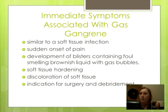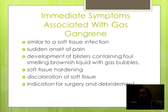The immediate symptoms associated with gas gangrene are as follows. It is similar to a soft tissue infection. There is sudden onset of pain, the development of blisters containing foul-smelling brownish liquid gas bubbles, soft tissue hardening, and a discoloration of the soft tissue. All of these are an indication for surgery and debridement.